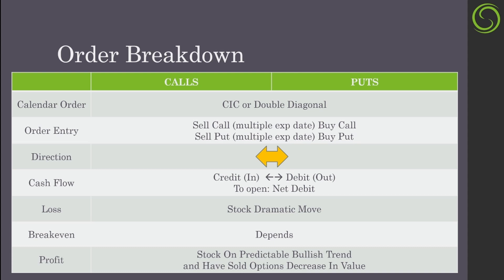We are not wanting rapid or volatile movements. The cash flow will be a credit in for the calls and puts we're selling and a debit out for the ones we're buying, but to open the transaction it will be a net debit. Losses can happen with any dramatic stock movement, so with high-growth stocks you definitely don't want to use this strategy.